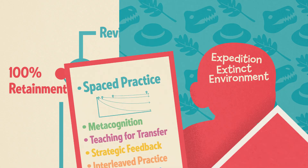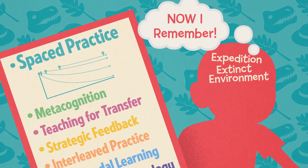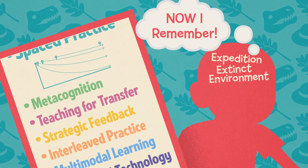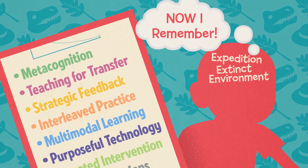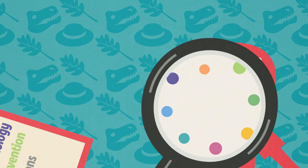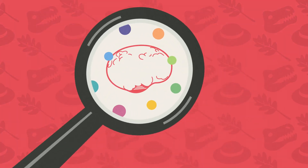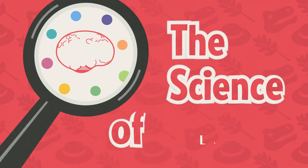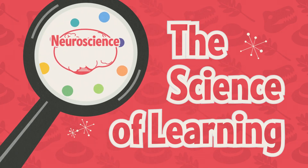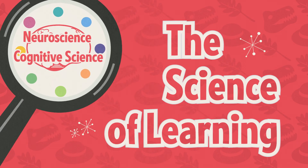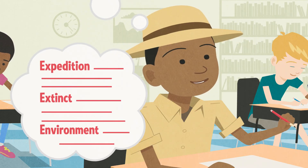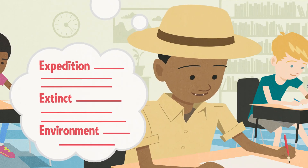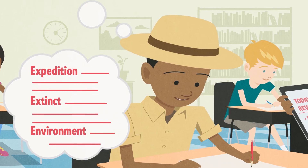Using spaced practice is just one example of ways we can leverage learning science research to support learners in the classroom. The more we carefully examine the various fields of study encompassed by the science of learning, like neuroscience and cognitive science, the more effective we can be in every precious moment spent in the classroom.